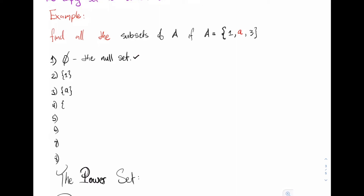We have the set containing {1}, the set containing {a}, and the set containing {3}. Then we have the sets containing two elements: {1, a}, {1, 3}, and {a, 3}. Finally, we have the set containing all three elements: {1, a, 3}. Notice that A is a subset of itself.